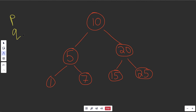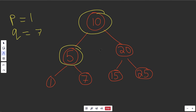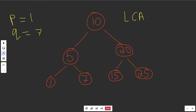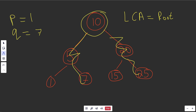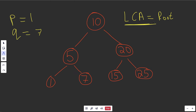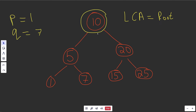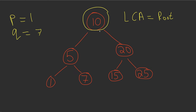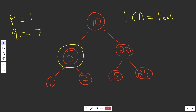Let's look at examples. If P equals the 1 node and Q equals the 7 node, the answer should be 5, since both are descendants of 5 and it's the lower common ancestor. We'll keep track of the LCA as the root to start, since the root is at least a common ancestor to all of its descendants. Now, both of these values are less than the current node's value, so we'd search in the left subtree. Now this becomes our updated lowest common ancestor.